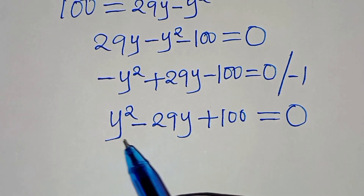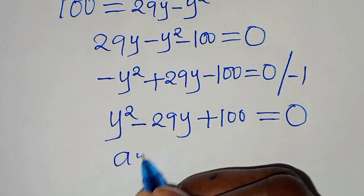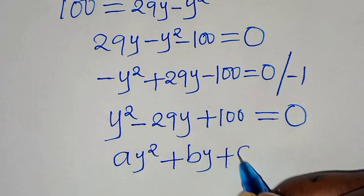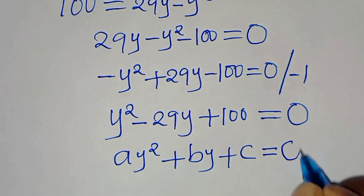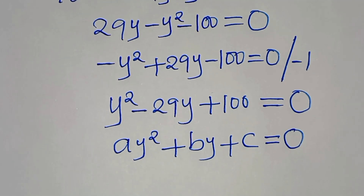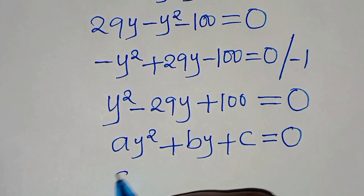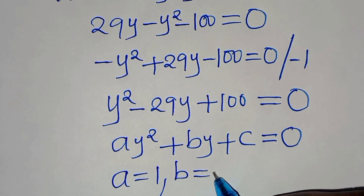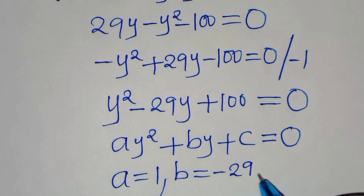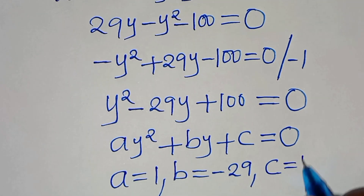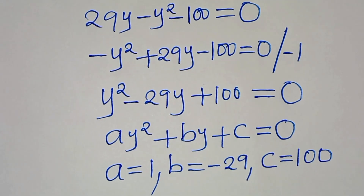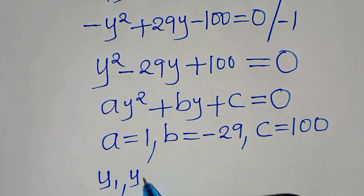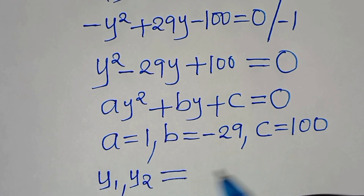This is a quadratic equation of the form ay squared plus by plus c equals 0. From this equation, a equals 1, b equals minus 29, and c equals 100. We can solve for y1 and y2 by applying the quadratic formula.